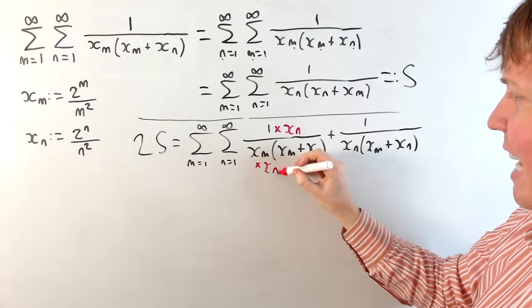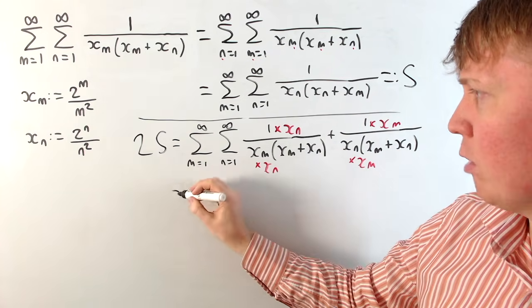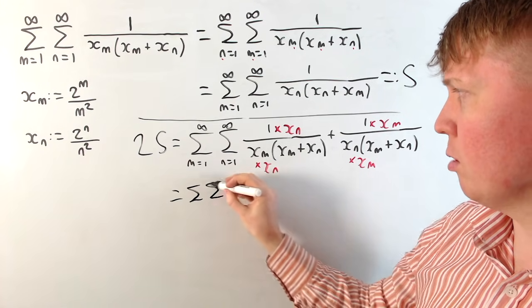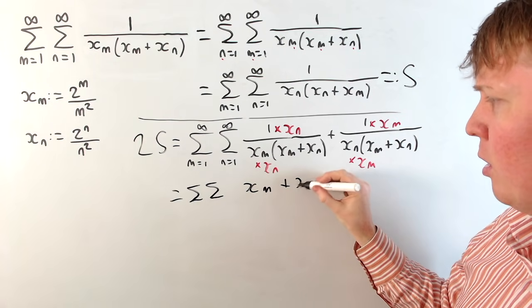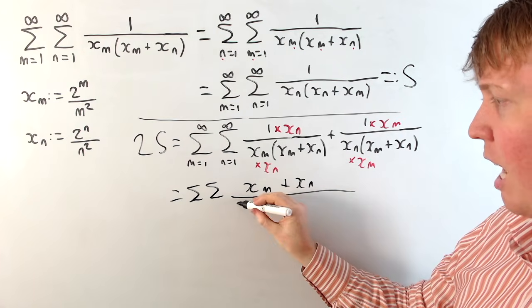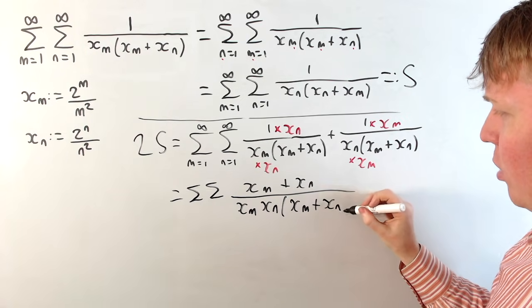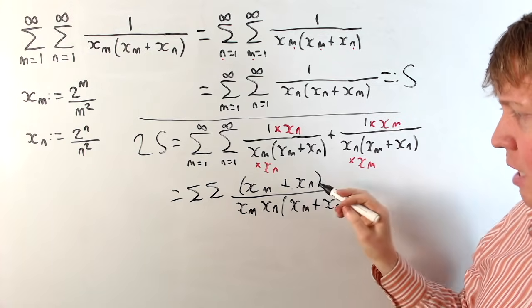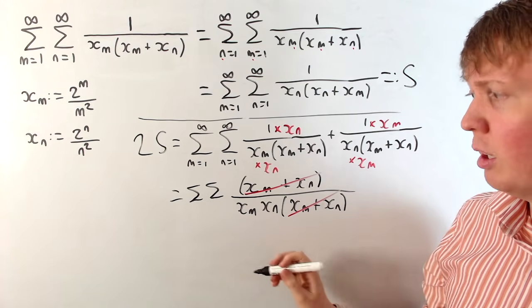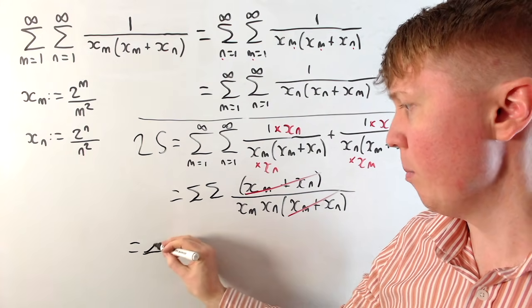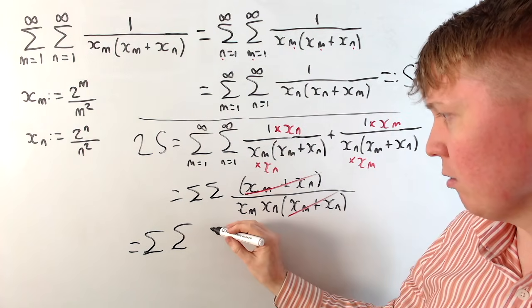We can rewrite this whole double sum as the double sum of xm plus xn over the common denominator xm times xn times xm plus xn. The numerator xm plus xn just cancels with the corresponding factor in the denominator, which is really nice, and now we've got a much more workable double sum. So we can rewrite the whole double sum as the sum of 1 over xm times 1 over xn.